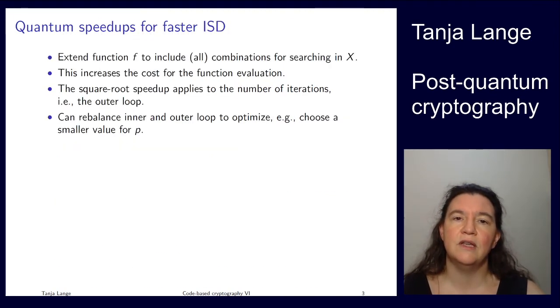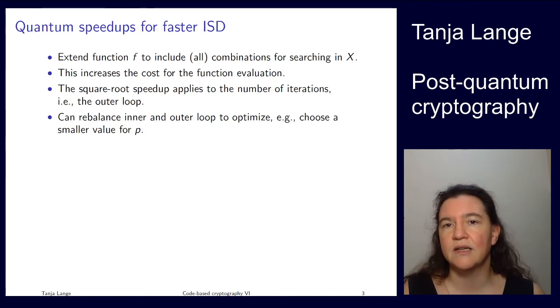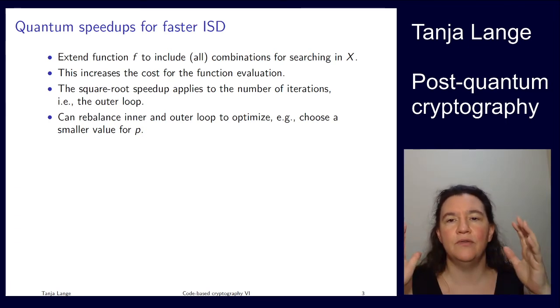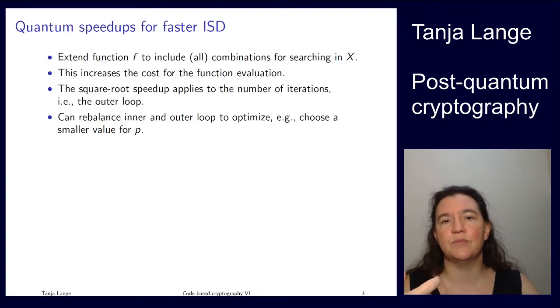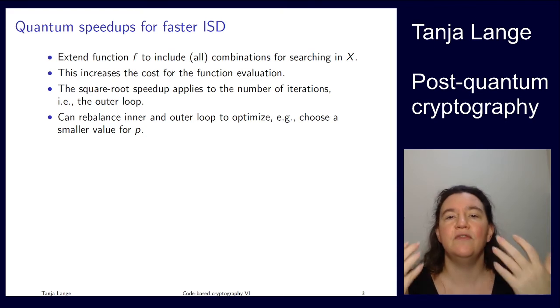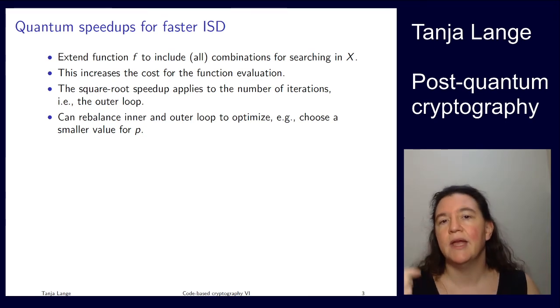If we now look at the more complicated ISDs, so we had seen in the class Lee-Brickell, Leon, Stern, and then also generalizations of Stern, we can again take all of this into one big function. Say let's think about Lee-Brickell here. Then we are allowing in the left-hand side of this x part, we are also allowing p positions. And so now we can make our function even bigger, bigger than Prange, and include searching through all the combinations in x.